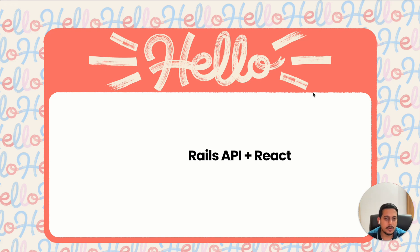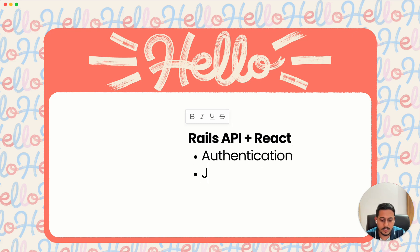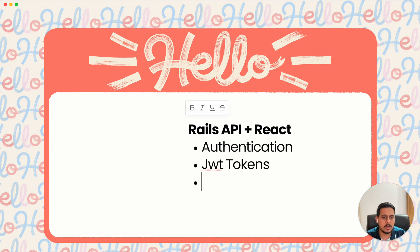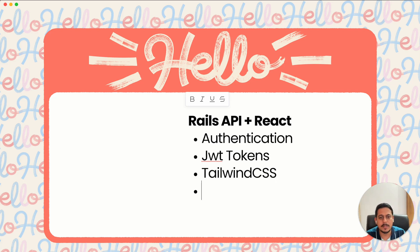What we'll be covering in this series: we'll be covering authentication — we'll be using JWT tokens. Don't worry if you don't know any of these things; we'll be covering everything from scratch. We'll also be using Tailwind CSS along with Rails and React, and a lot of other things.